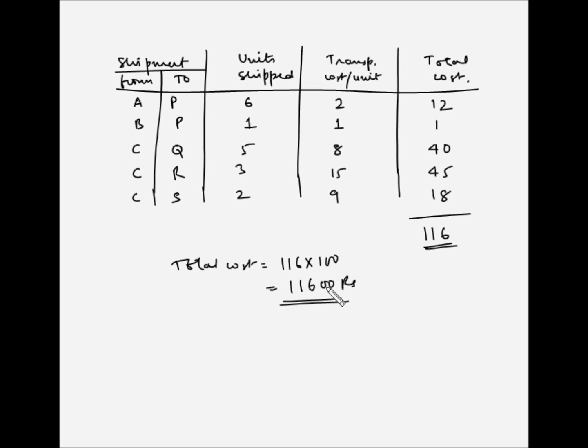The northwest corner method of allocation does not take into account the transportation cost. It starts from the northwest square and keeps allocating units based on the demand and supply situation. That is why this method may not yield the most economical initial solution.